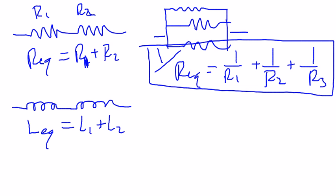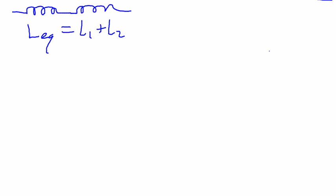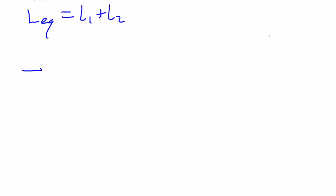And the same thing for the resistors. Capacitors, however, are opposite. They add, when they are in series, the equivalent capacitance now is added inversely. So we have to do 1 over C equivalent equals 1 over C1 plus 1 over C2.